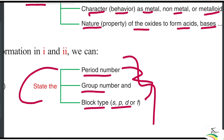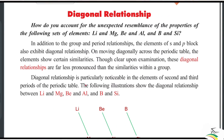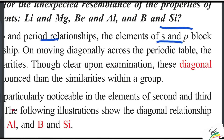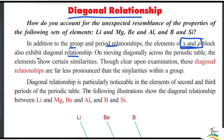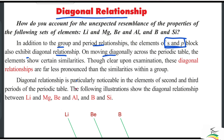In addition to group and period relationships, the elements of the s, p, and d blocks also exhibit a diagonal relationship. It is not a group or a period relationship, but it involves moving diagonally across the periodic table.